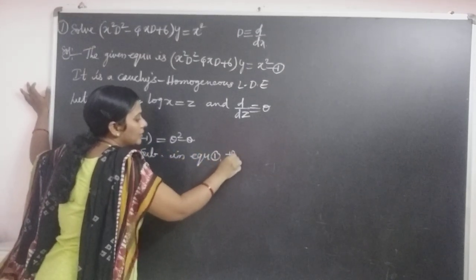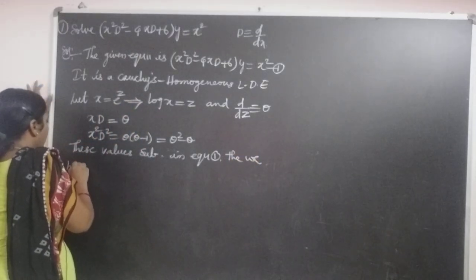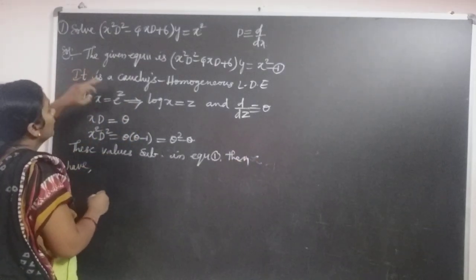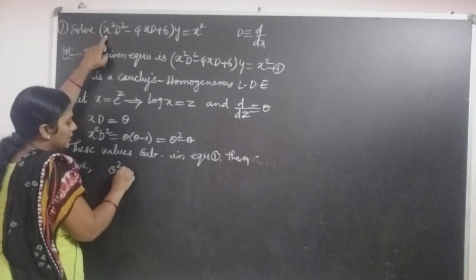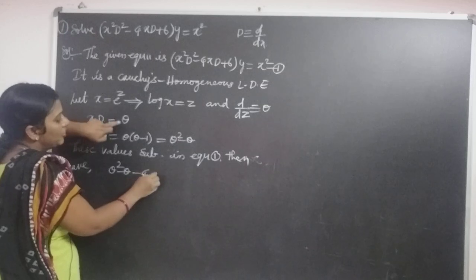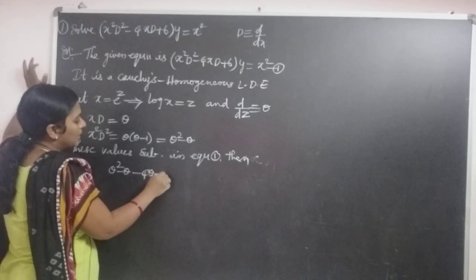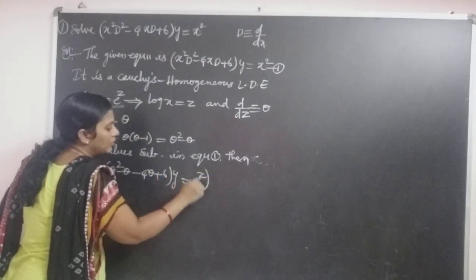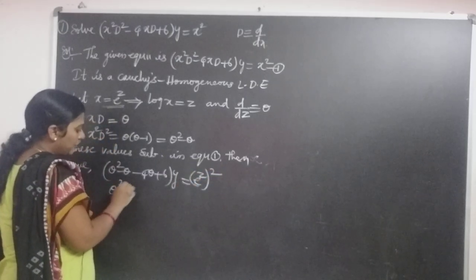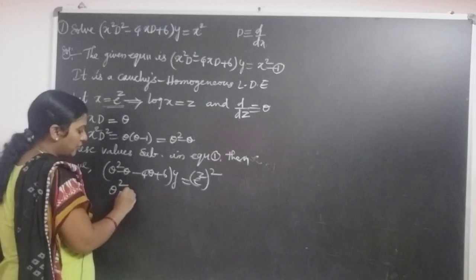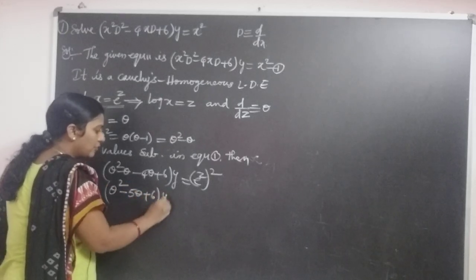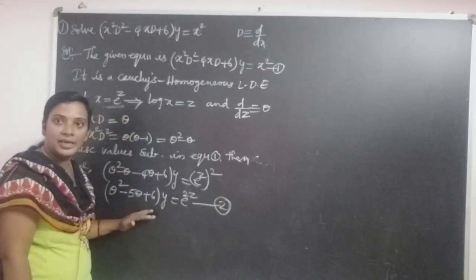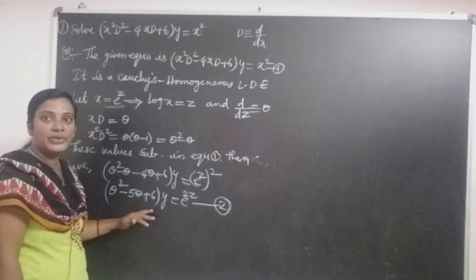Substituting these values into equation 1: in place of x squared D squared we put theta squared minus theta, minus 4 times theta in place of xD, plus 6 into y, equals x squared which is e power z whole squared, i.e., e power 2z. After simplification, theta squared minus theta minus 4 theta gives theta squared minus 5 theta plus 6 into y equal to e power 2z. Let this be equation 2, which is a linear differential equation with real constants.